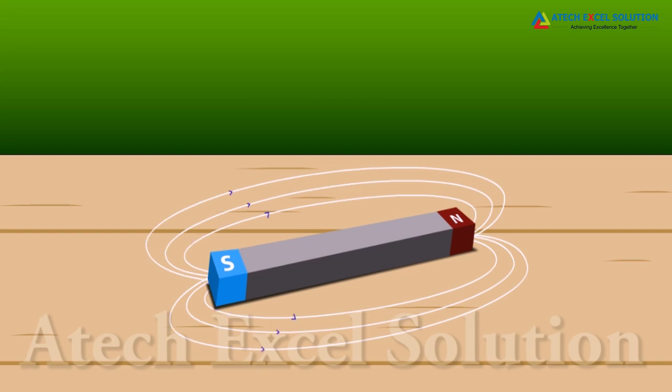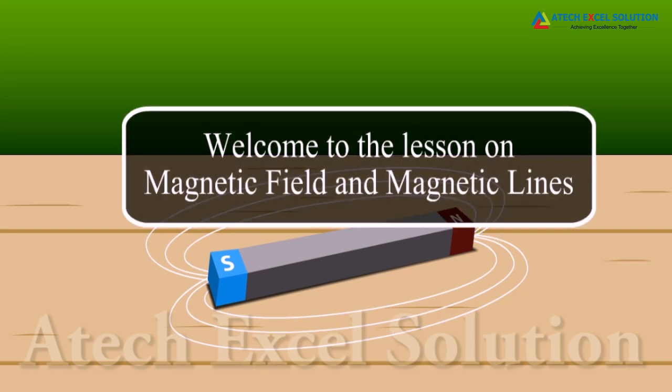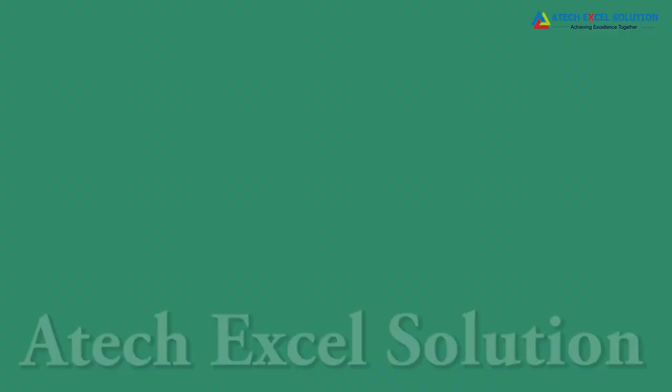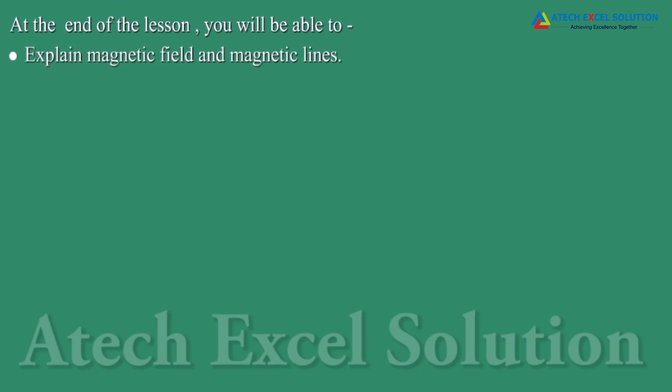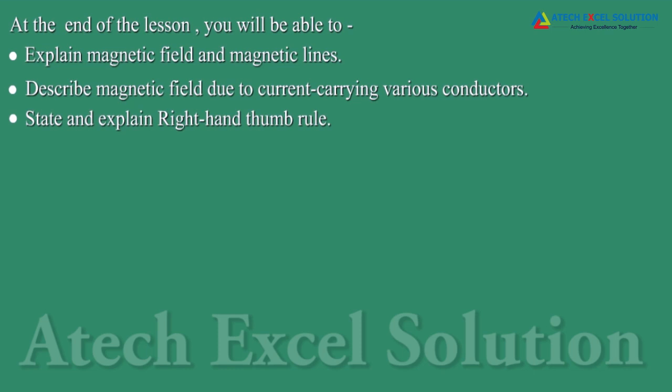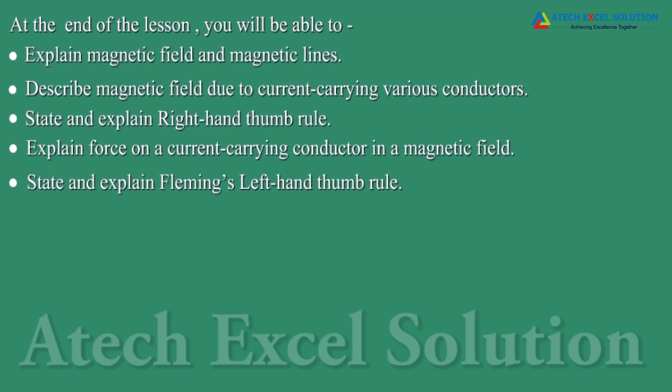Welcome to the lesson on Magnetic Field and Magnetic Lines. At the end of the lesson, we will be able to explain magnetic field and magnetic lines, describe magnetic field due to current carrying various conductors, state and explain right hand thumb rule, explain force on a current carrying conductor in a magnetic field, state and explain Fleming's left hand thumb rule, and explain the working of an electric motor.